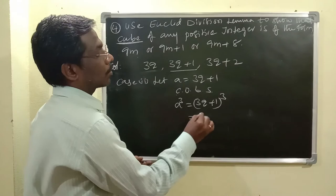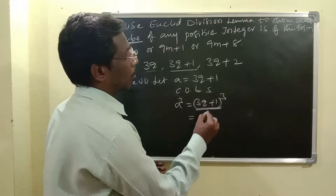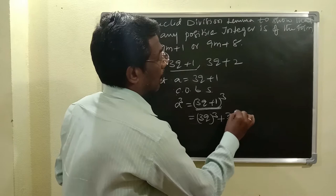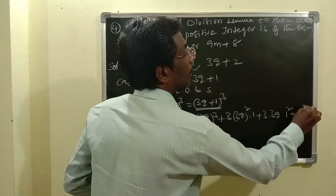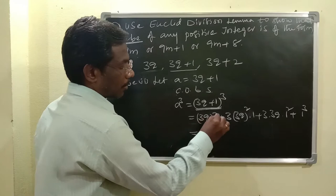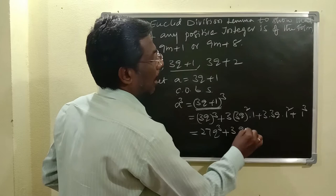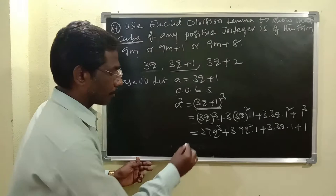The right side term is in the form of A plus B whole cube, so we expand using the formula A plus B whole cube equals A cube plus 3A squared B plus 3AB squared plus B cube. In place of A write 3Q and in place of B write 1. So we get: 3Q cubed is 27Q cubed, plus 3 times 3 squared, which is 9, times Q squared times 1, plus 3 times 3Q times 1 squared, plus 1 cube, which is 1.